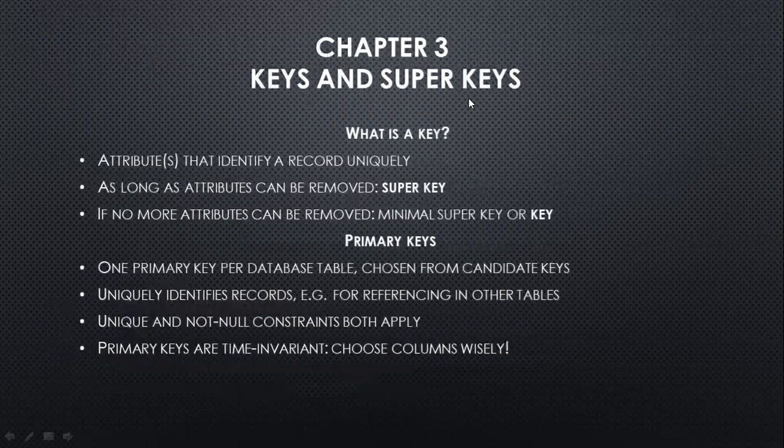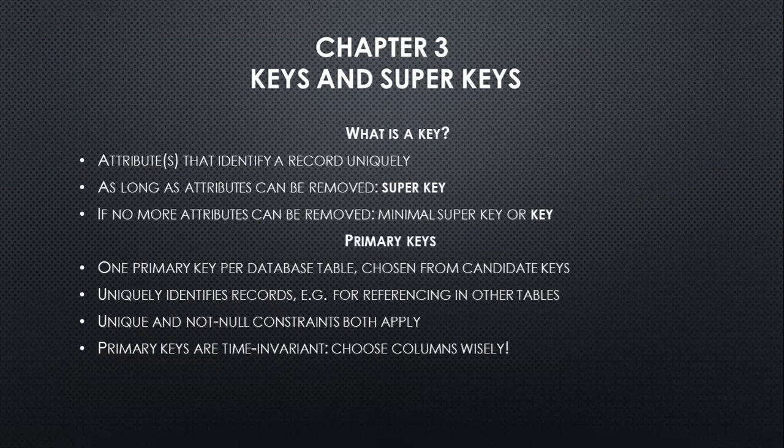In Chapter 3, there are keys and superkeys. What is a key? A key consists of attributes that identify a record uniquely. As long as attributes can be removed, it is a superkey. If no more attributes can be removed, it is a minimal superkey or primary key. One primary key per database table is chosen from candidate keys. It uniquely identifies records for referencing in other tables, with unique and not null constraints both applying. Primary keys are time invariant — choose the column wisely.